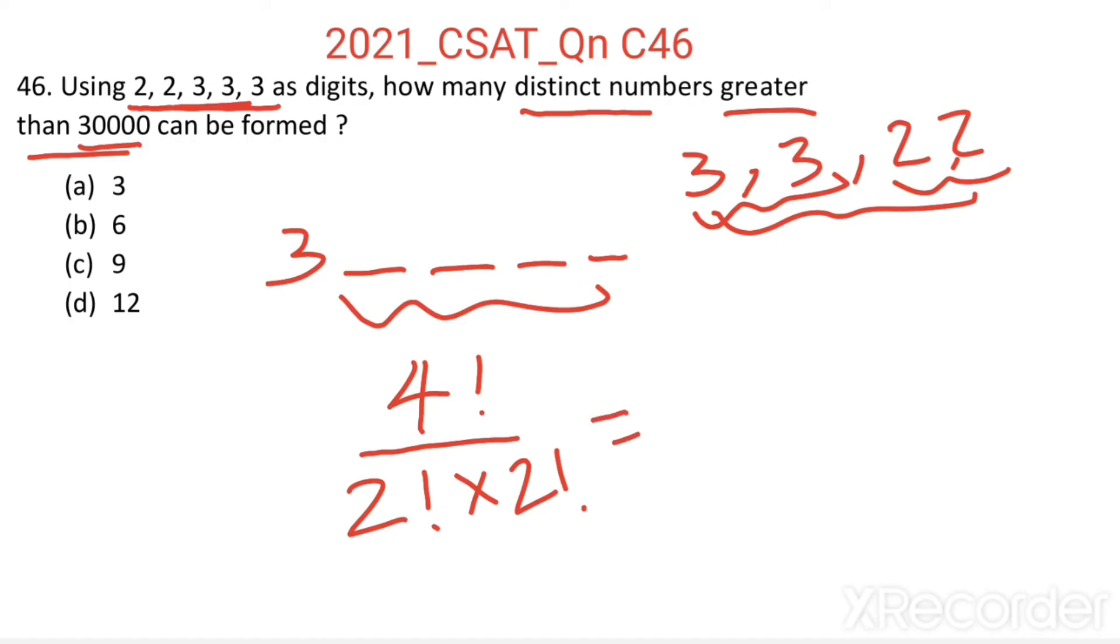Then we get 4 factorial equal to 4 into 3 into 2, divided by 2 factorial equal to 2, times 2. So we get 6.